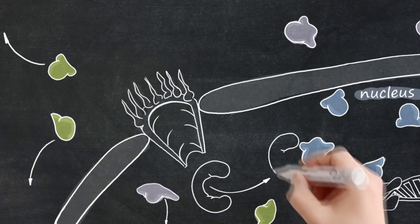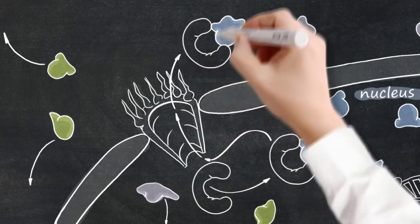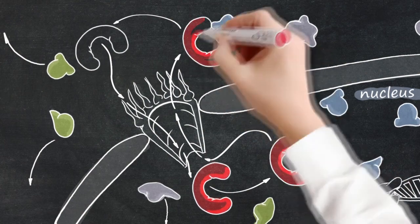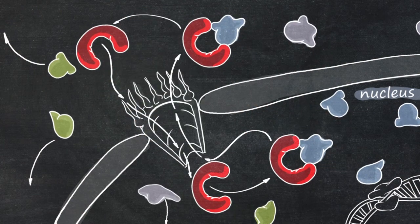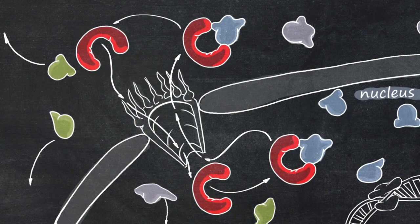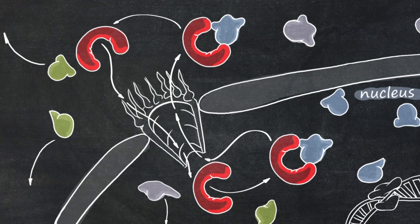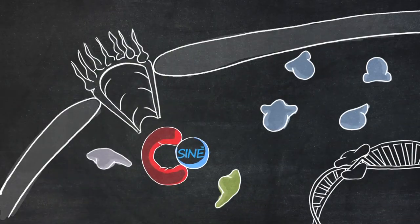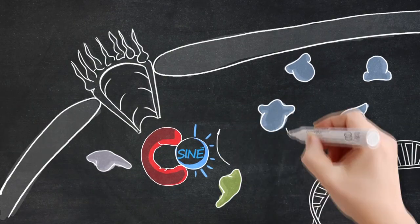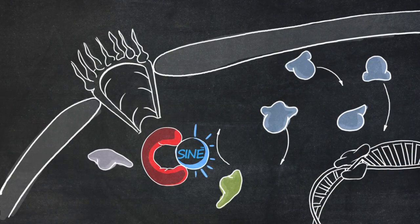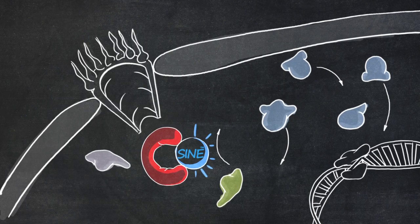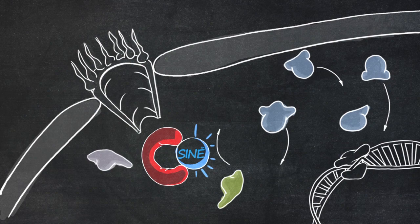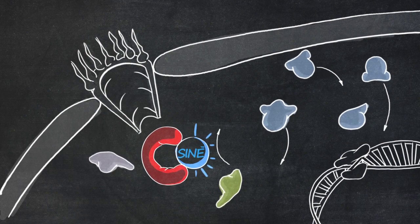XPO1 is a critical transporter which shuttles over 200 different proteins from the nucleus to the cytoplasm. Many pathological conditions alter the function of XPO1, thus interfering with the normal cellular localization of proteins. SINE compounds are able to block the transporter XPO1 and retain crucial proteins in the nucleus. This can limit viral replication, reduce inflammatory signals, and even induce death in cancerous cells.